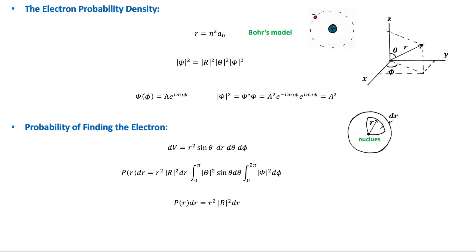This shows that the probability of finding the electron at a particular azimuth angle phi is constant and does not depend on phi. This means that the electron's probability density is symmetric about the z-axis, because the absolute square of phi is a constant.